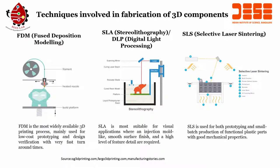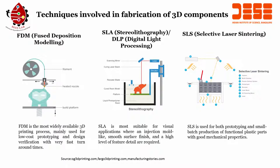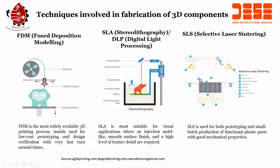SLS, which stands for selective laser sintering, has several components including heaters, a build chamber, a powder delivery system, a printed part, a recoater, a laser beam, X-Y scanning mirrors, and a laser. It is a complex system, but SLS is used for both prototyping and small batch production of functional plastic parts with good mechanical properties. This is another technique used for printing different components.